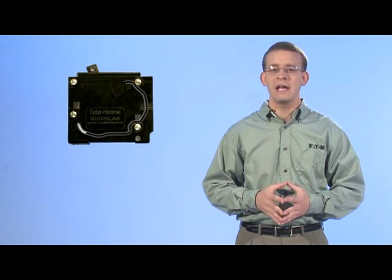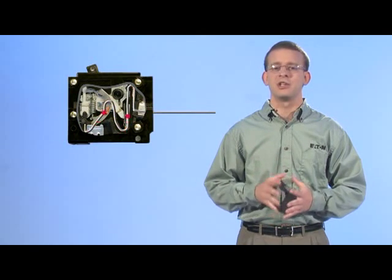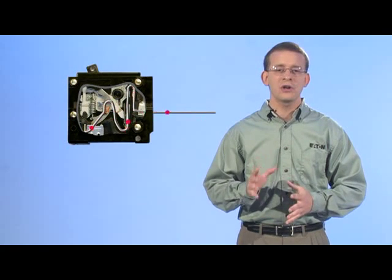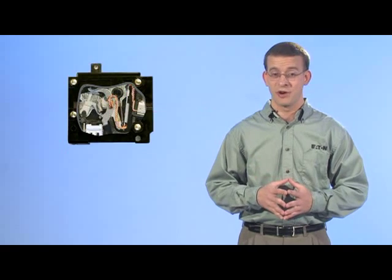It does this by way of an engineered bimetal that bends when current above its rating is applied across the circuit. It would only take a few seconds to trip the breaker if a high amount of excess current is being pulled through the circuit, but it could take several minutes if the current is just above the breaker's rating.